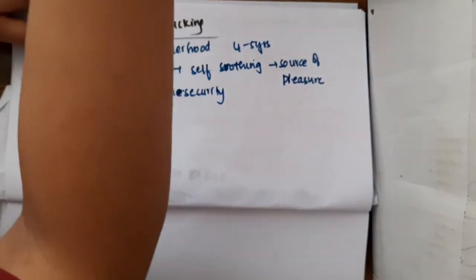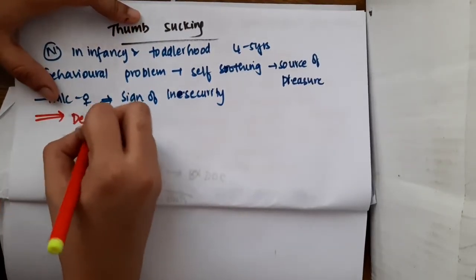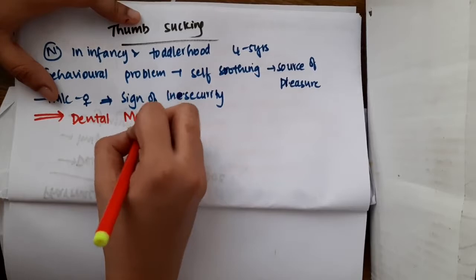Because of persistent thumb sucking, dental malalignments can occur.